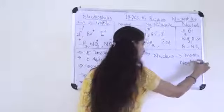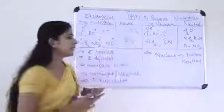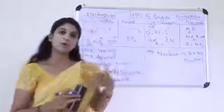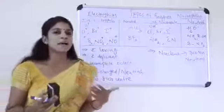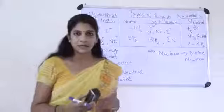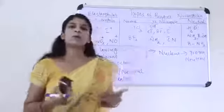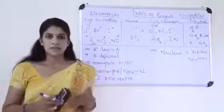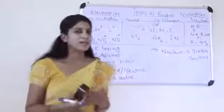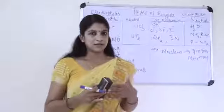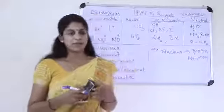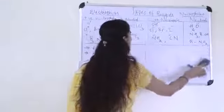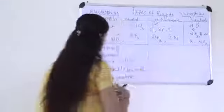We can say a nucleophile is like the opposite of a proton. A proton is a positive charge species, whereas a nucleophile is a negative charge species — that is, a nucleophile is an electron-rich species. If they are negative charge species, they are electron-rich donors.